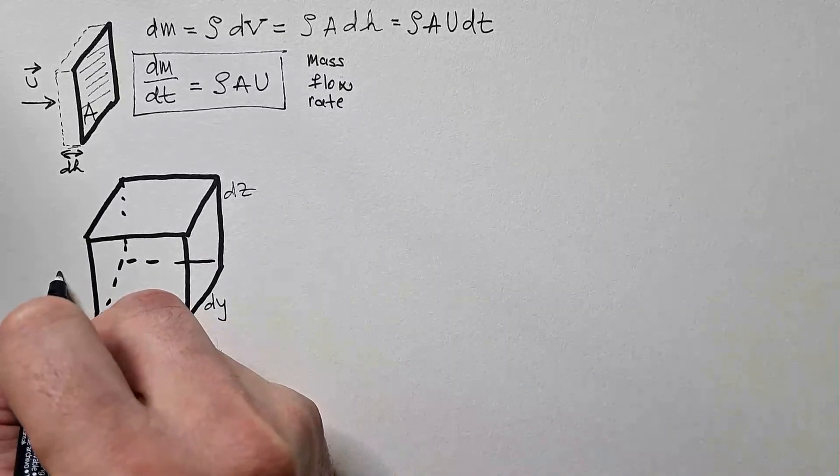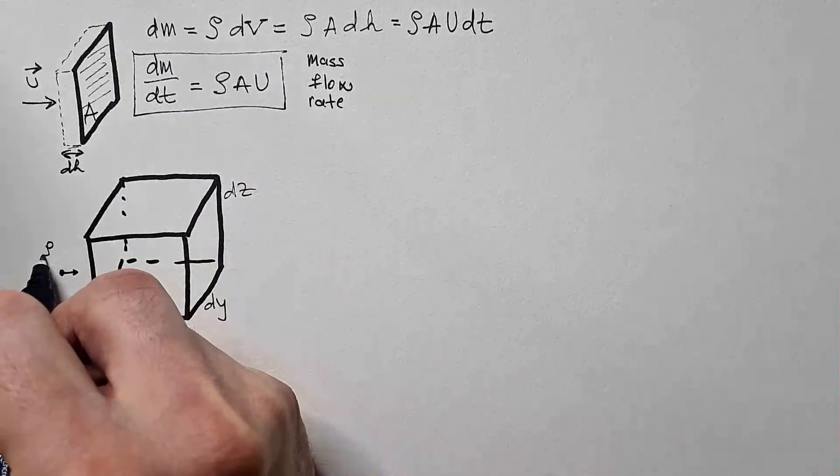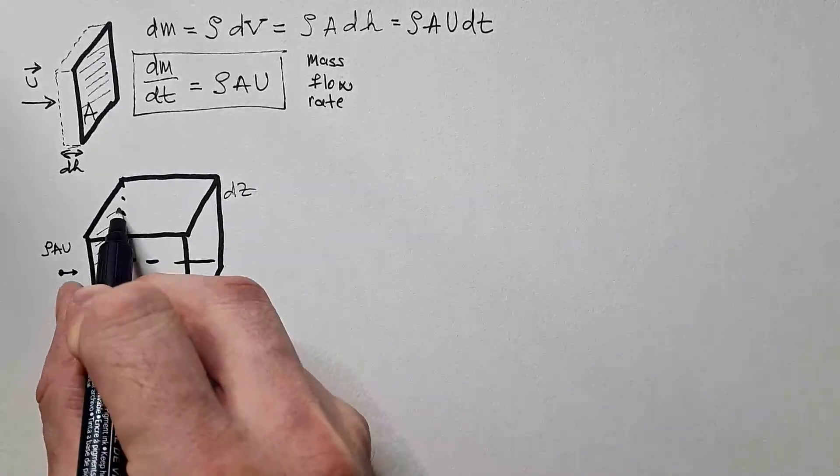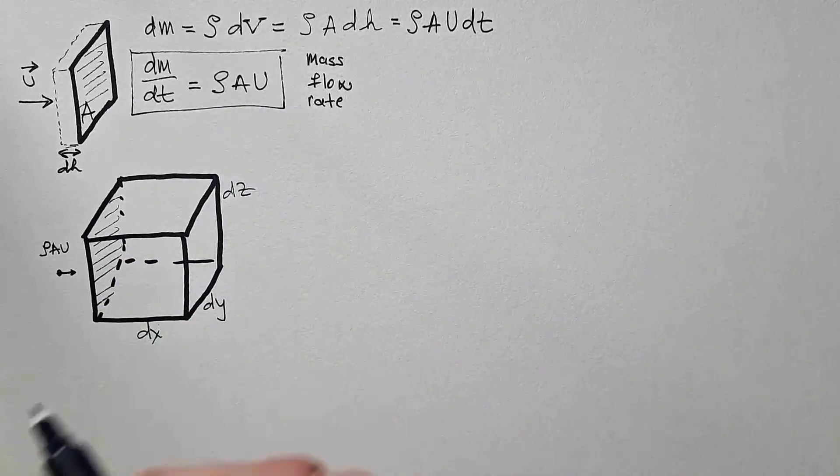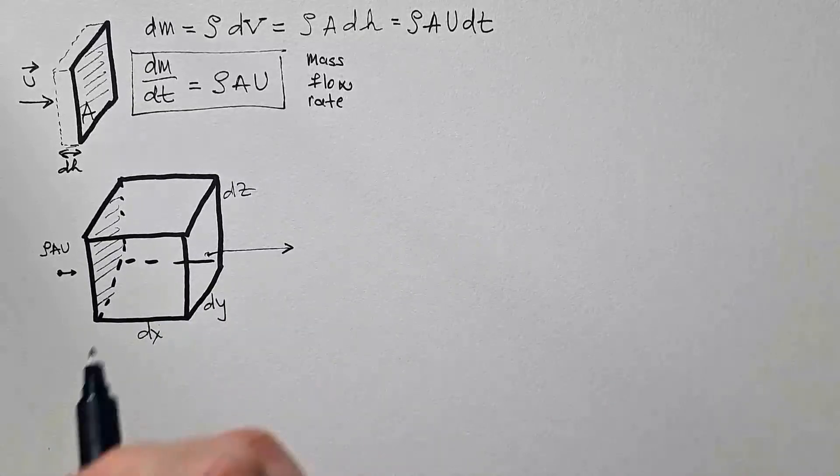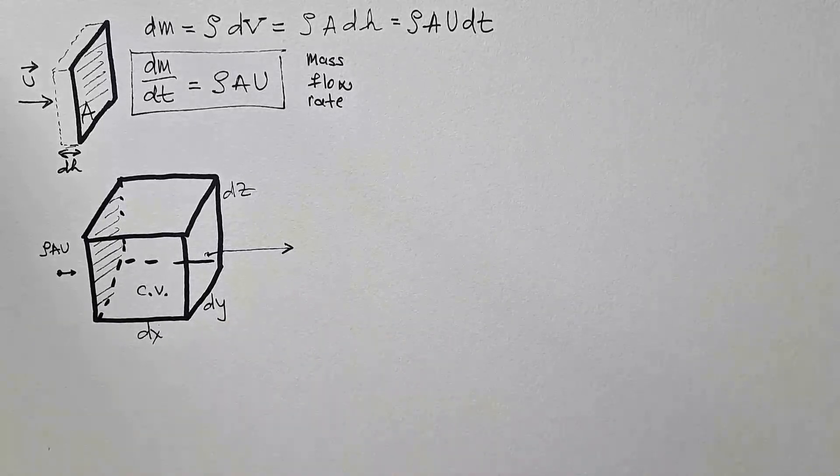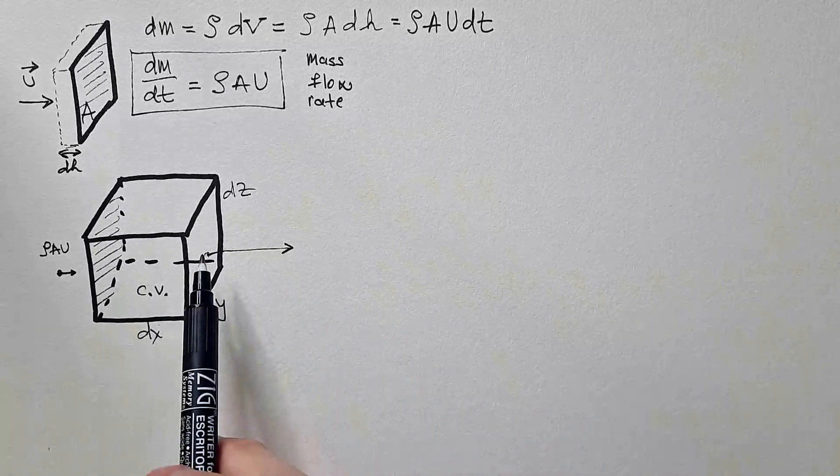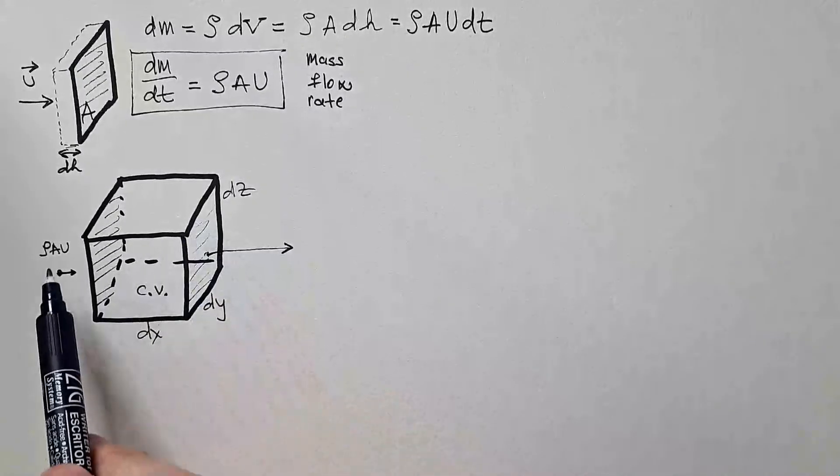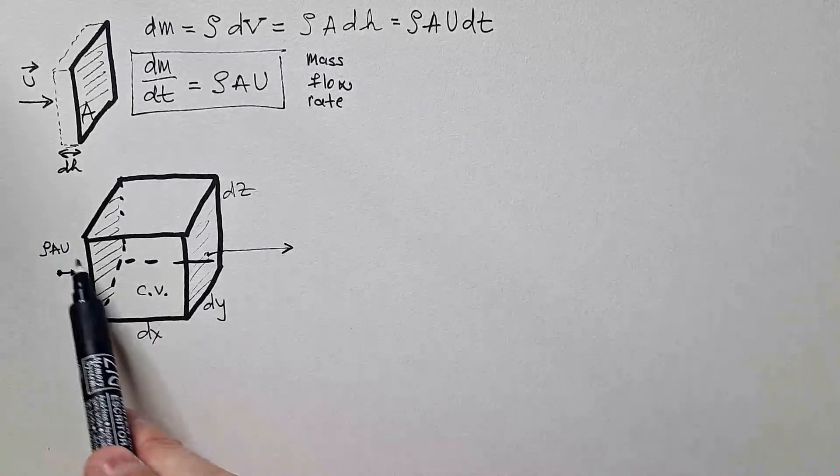So there is a flow coming in and the mass flow rate is ρ A u through this surface. We just derived it here. Now, there is also some flow leaving this control volume. Because dx, dy, and dz are infinitesimally small distances, I can express mass flow rate on this side by using Taylor's expansion of the same quantity on this side.